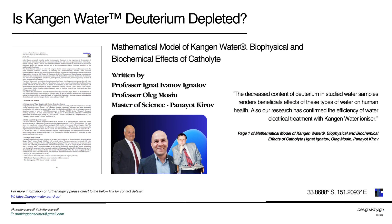Furthermore, Kangen water being deuterium depleted is also addressed in the paper Mathematical Model of Kangen Water: Biophysical and Biochemical Effects of Cathode Light, written by Professor Ignater, Professor Mosen, and Professor Kirov. On page one it states: 'Decreased content of deuterium in studied water samples renders beneficial effects of these types of water on human health. Our research has confirmed the efficiency of water electrical treatment with Kangen water ionizer.' So Kangen water ionizers do separate deuterium, and thus Kangen water is deuterium depleted.